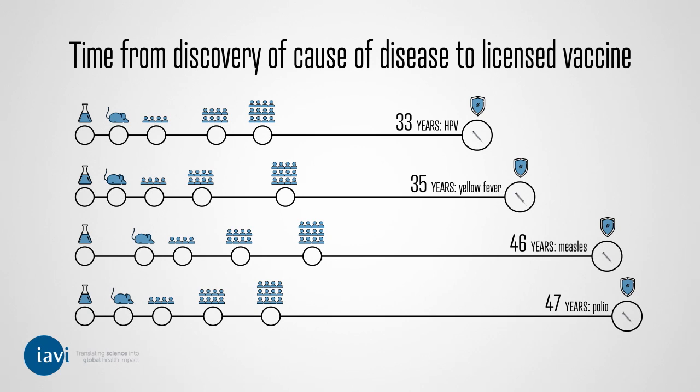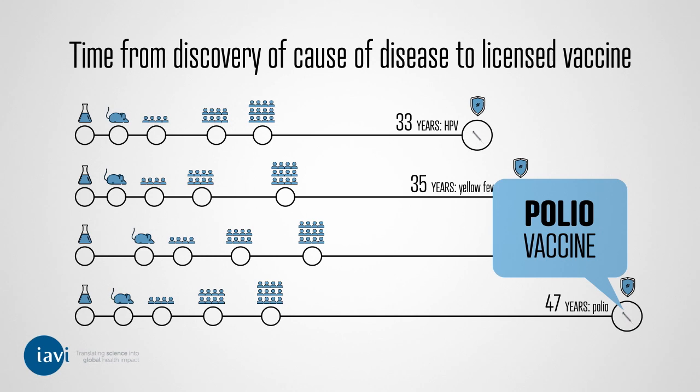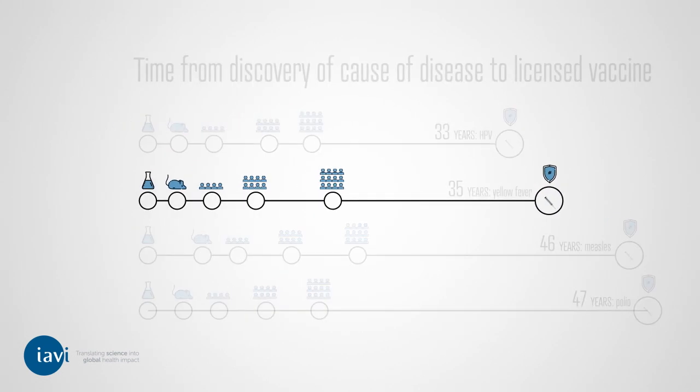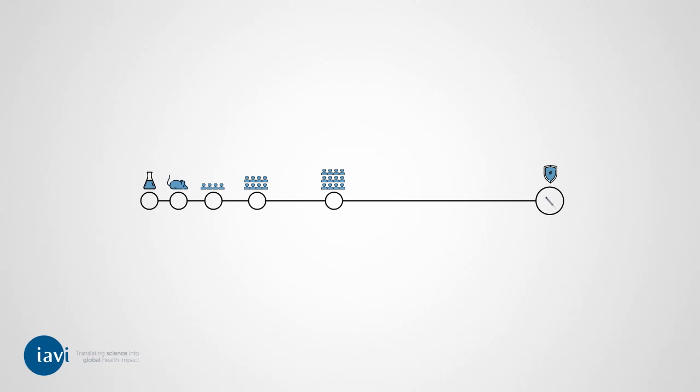For example, the vaccine against polio took over 45 years to develop. Like these other vaccines, the development of a HIV vaccine should be possible.